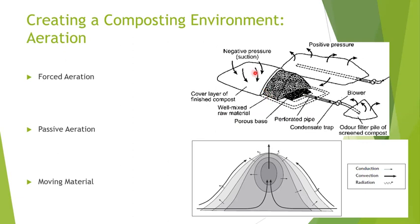Here you can see a demonstration of negative pressure aeration where air is pulled through a carbon filter from the exterior cap, while positive pressure uses a perforated pipe running underneath the pile and pumps air to the unexposed interior. This type of system would be called an aerated static pile, or ASP for short. We'll go into this more later, including how regulations differ for these static-type piles.